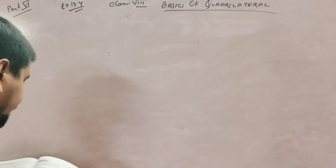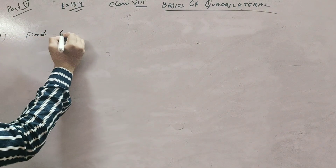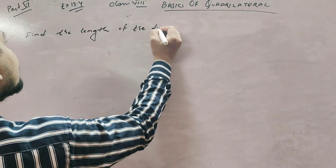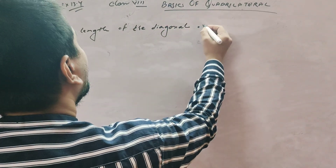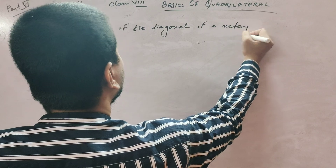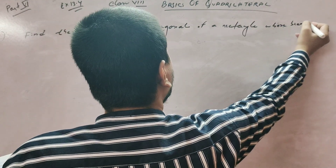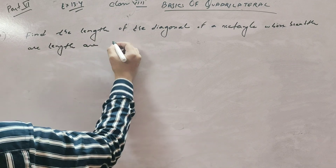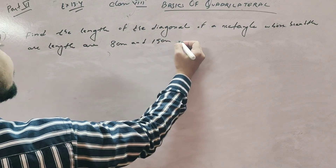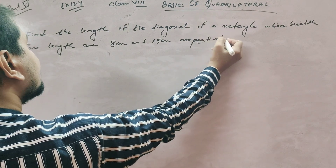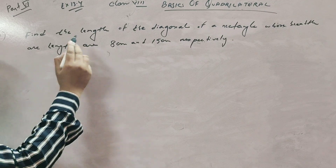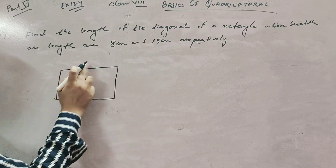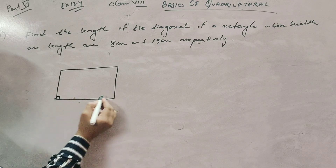Question number 1: Find the length of the diagonal of a rectangle whose breadth and length are 8 centimeter and 15 centimeter respectively. First of all, we know the features of a rectangle — opposite sides are equal, and each angle contains 90 degrees.